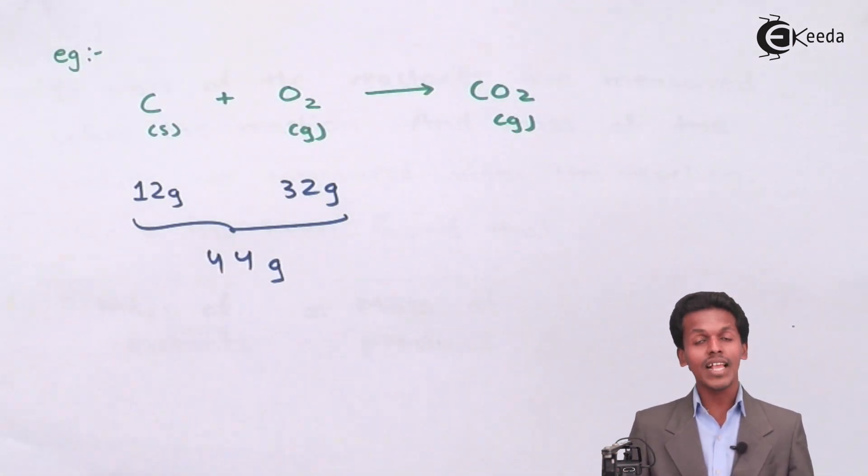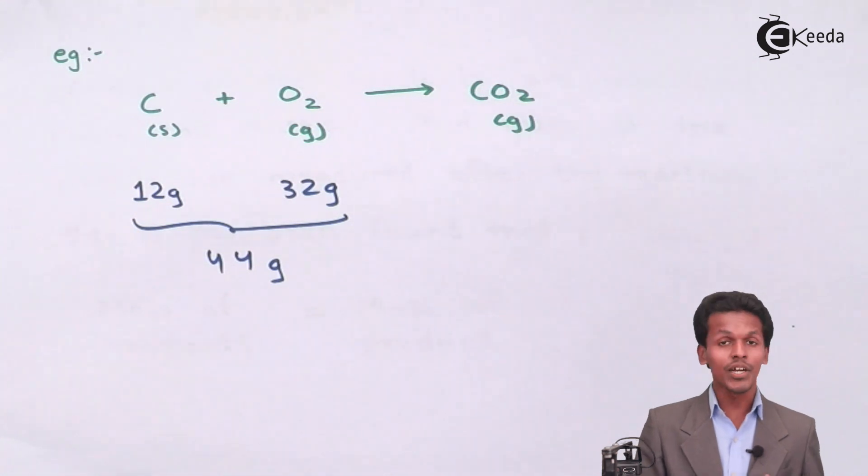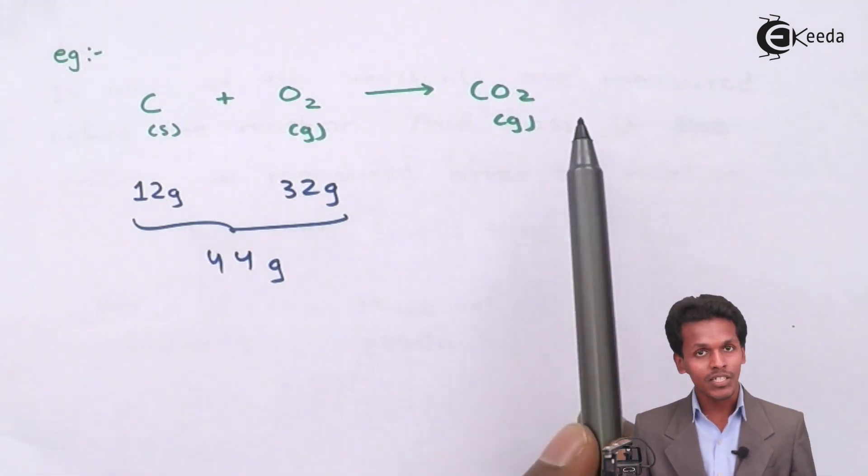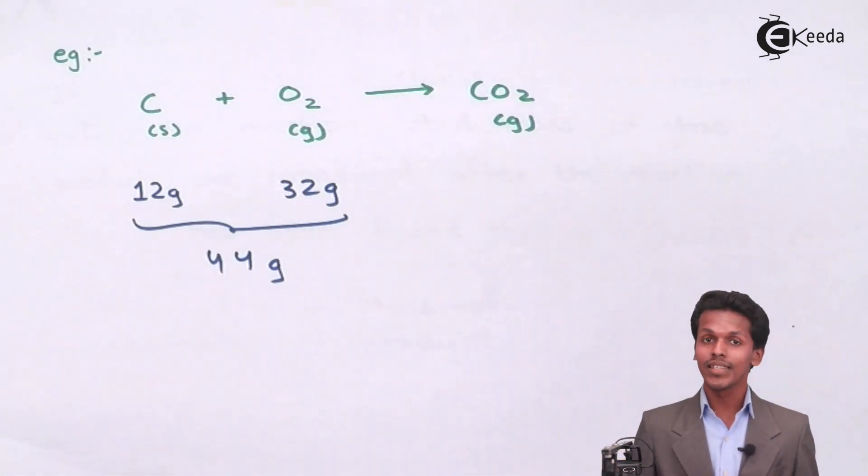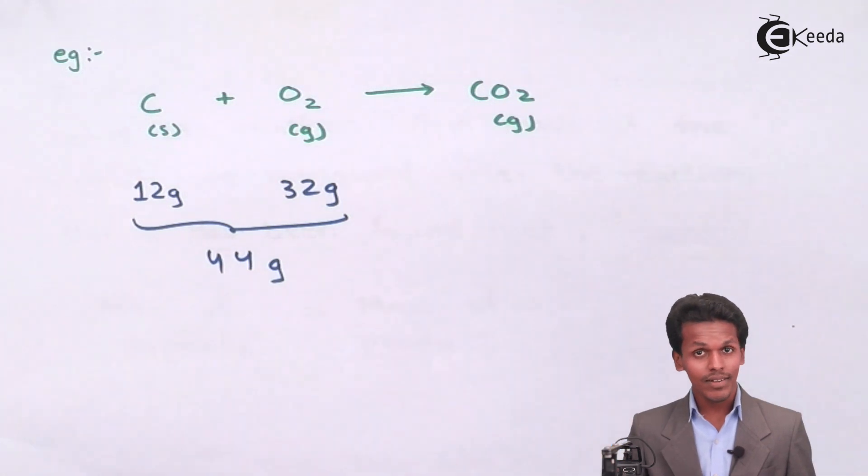When the reaction is complete, carbon dioxide is produced. One mole of carbon dioxide has a molar mass of 44 grams.